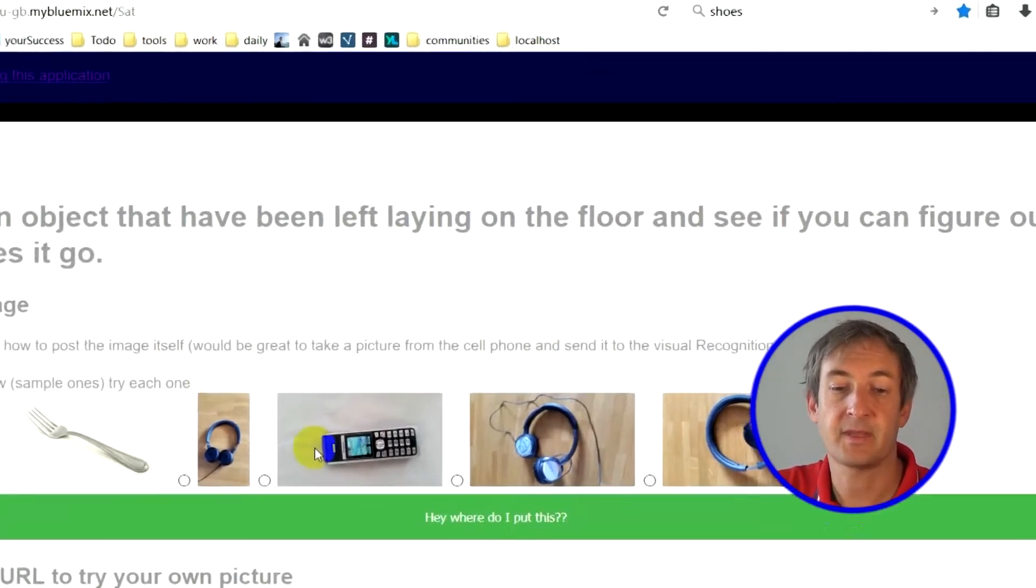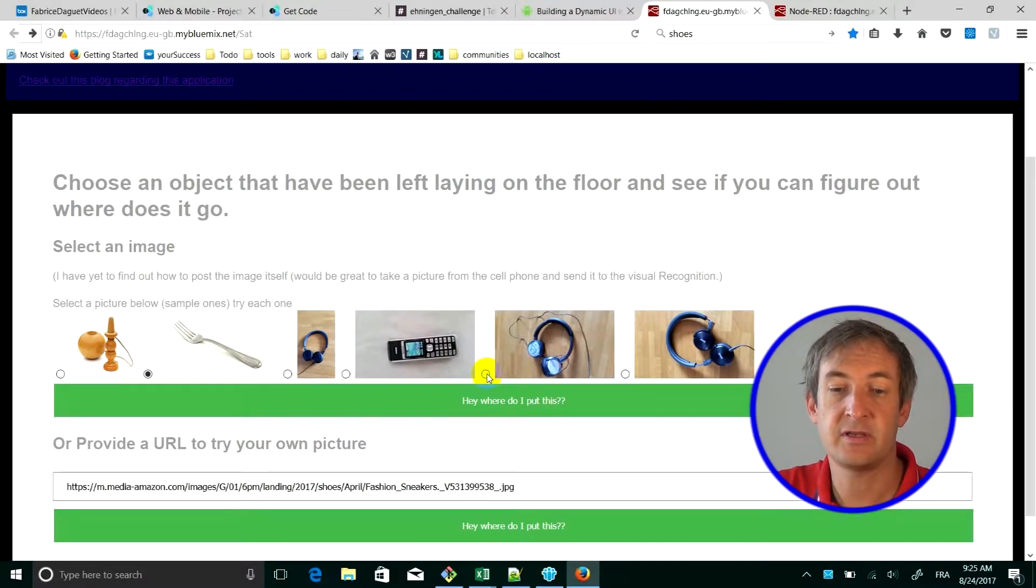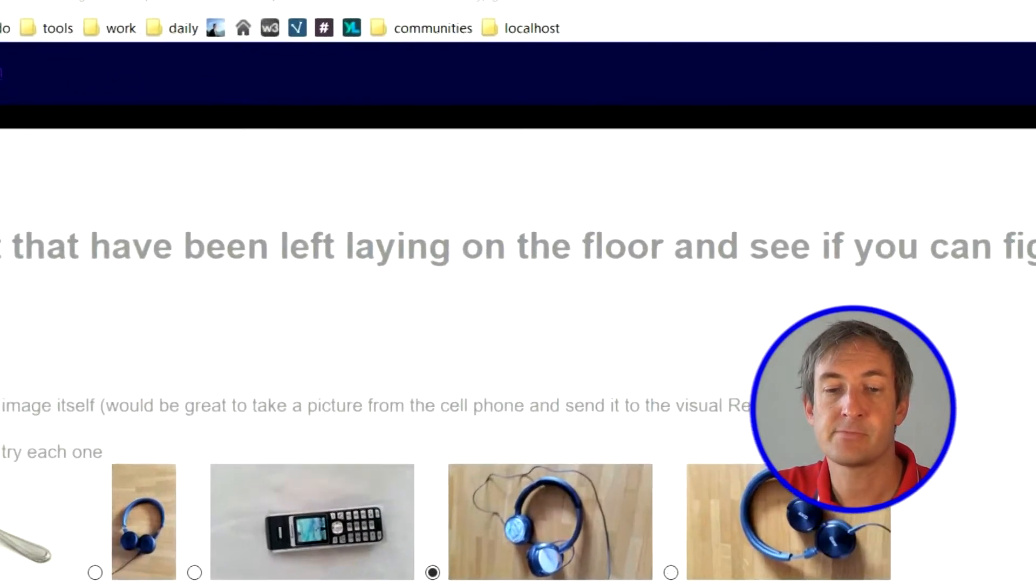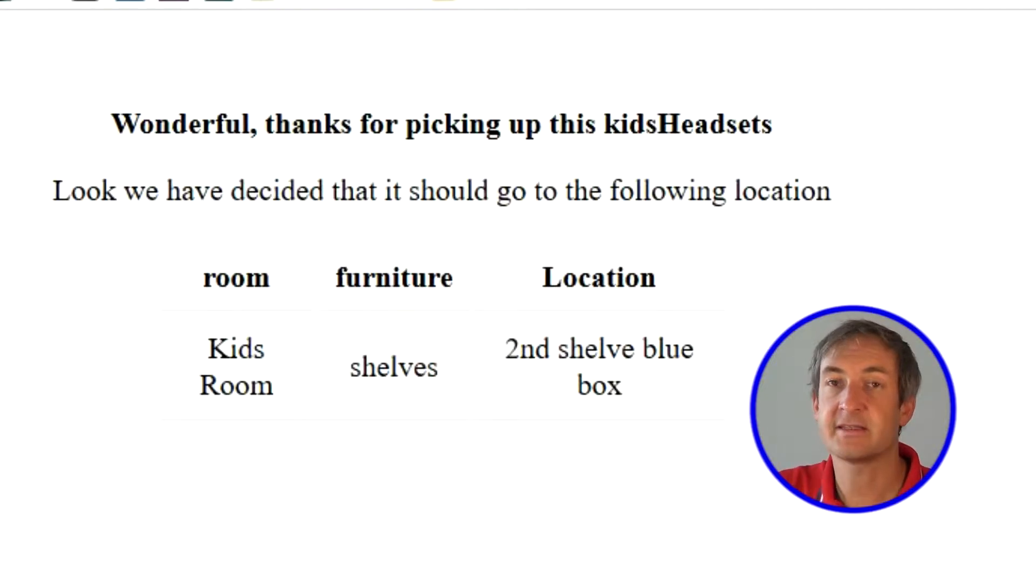Another one. Let's see that one, for example. Where does it go? Great! It's the kids' headset, the kids' room shelves, second shelf blue box. Very simple.